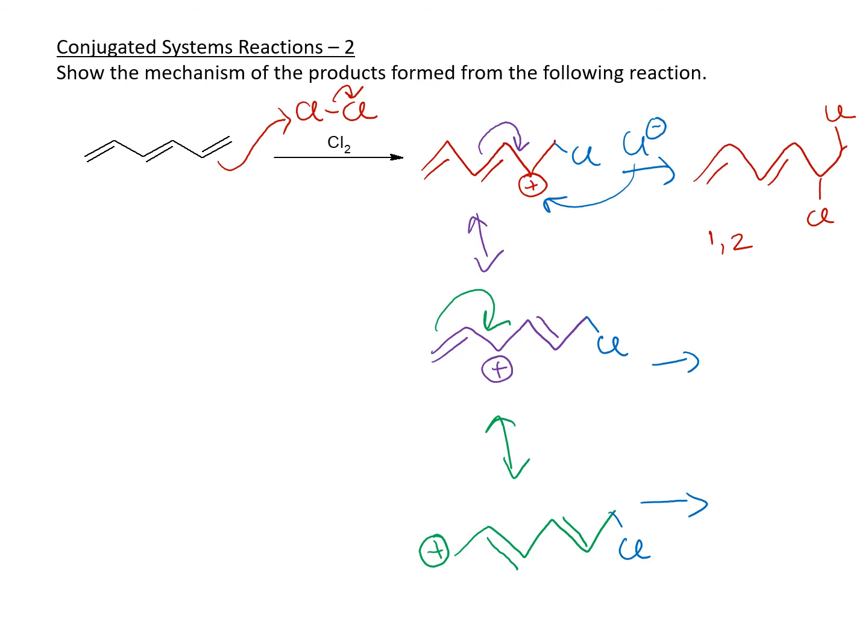For the next one, we are going to add the chlorine on this carbocation. And so the next one is going to be double bond here, double bond here. The chlorine is here, and the chlorine is going to be here. So that's a 1, 2, 3, 4. So 1,4 addition.